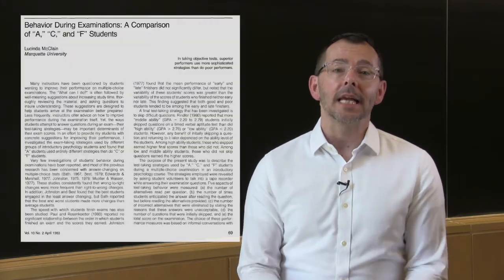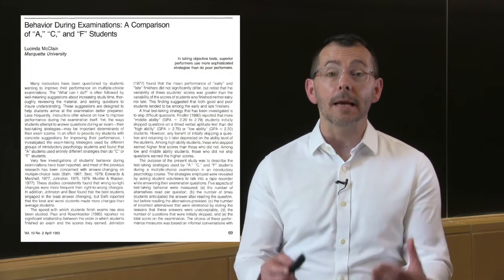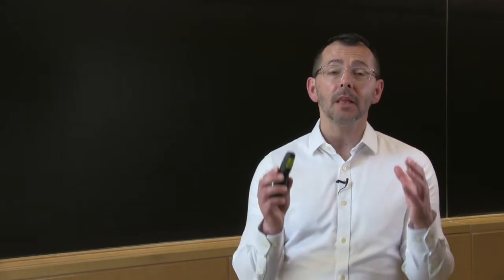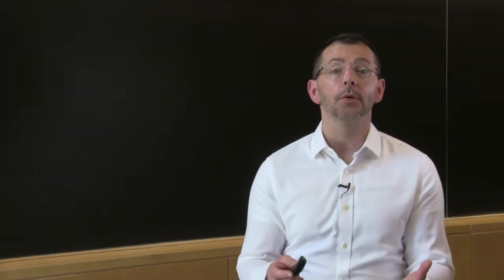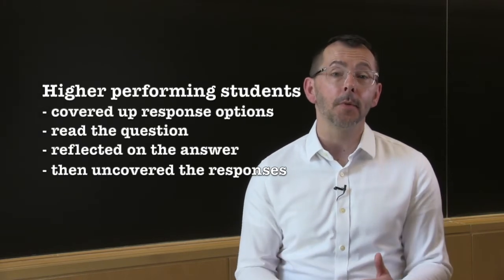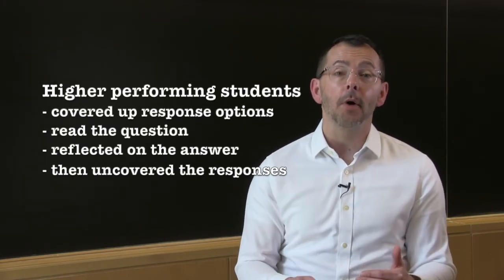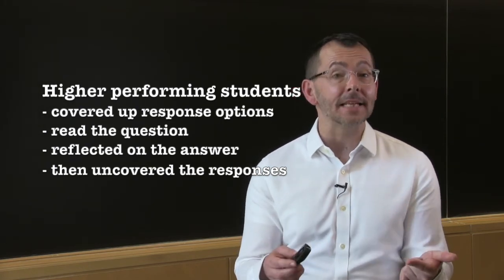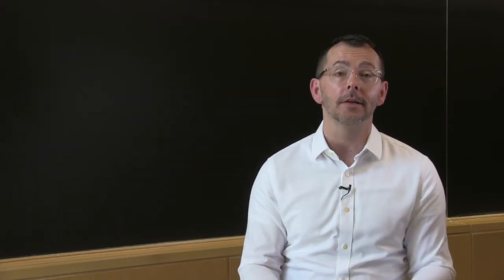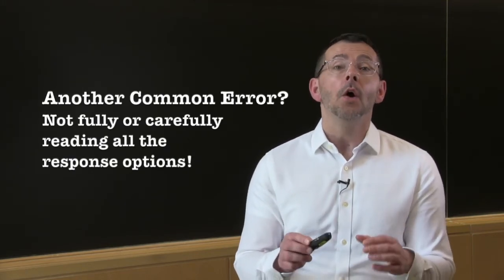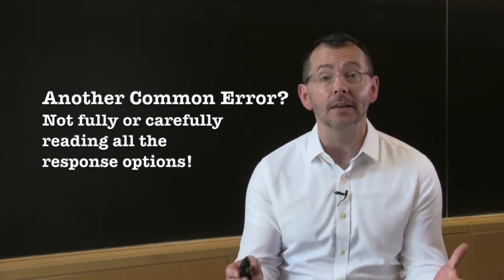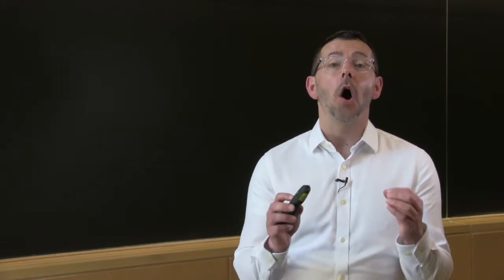Connected to this idea, a study by McLean and another study by Guant and colleagues each has demonstrated that we should be covering up the response options while we're focusing on the stem of the question. Looking at the response options before or while we are trying to read the stem of the question is associated with lower performance. Whereas higher performing students covered up the response options, read the question, and thought about the possible answer. The higher performing students, after fully reading the stem of the question and thinking about the possible answer, then uncovered the responses and fully read all of the possible responses. And this is another common error made by low performing students. When they're reading the response options, the mistake is to stop reading the response options as soon as we encounter one that looks acceptable. Higher performing students read all of the response options.